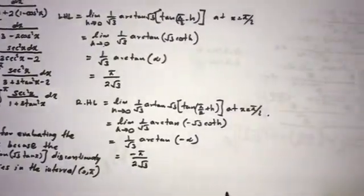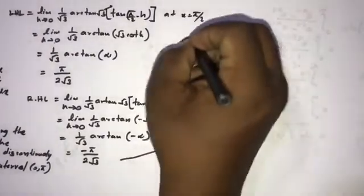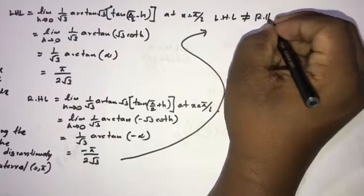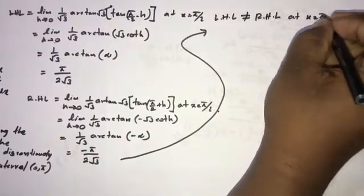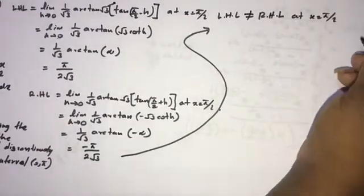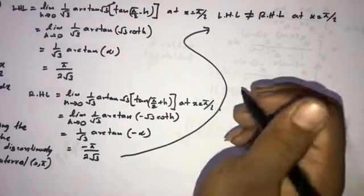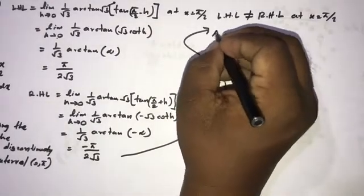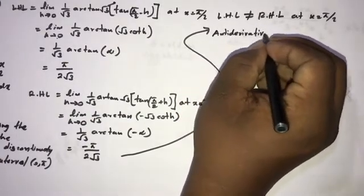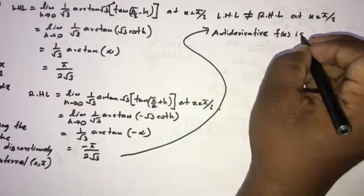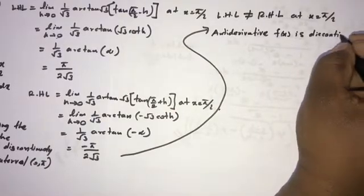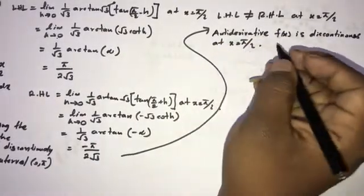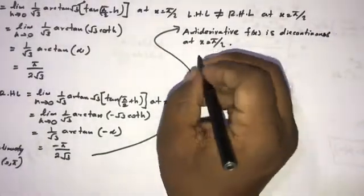Since the left-hand limit does not equal the right-hand limit at x equals π/2, the antiderivative F(x) is discontinuous at x equals π/2. Therefore we cannot directly apply the Newton-Leibniz formula.